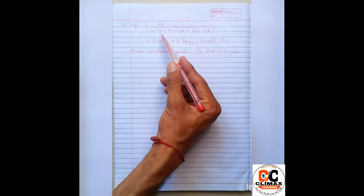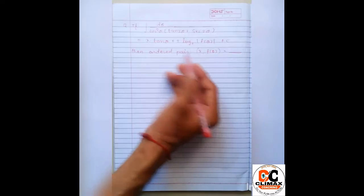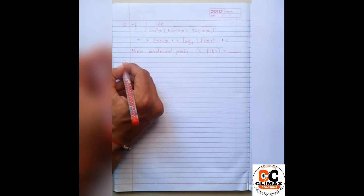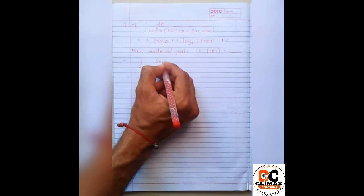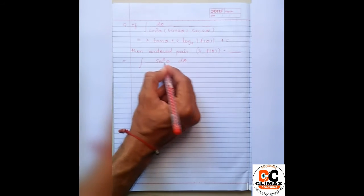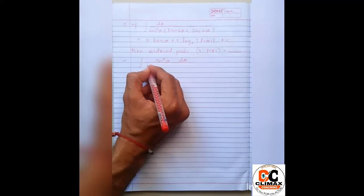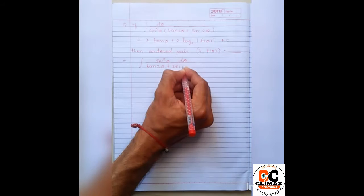we have three functions: cos theta, tan theta and sec theta. So, first of all, we can write this question as sec square theta d theta divided by tan 2 theta plus sec 2 theta.